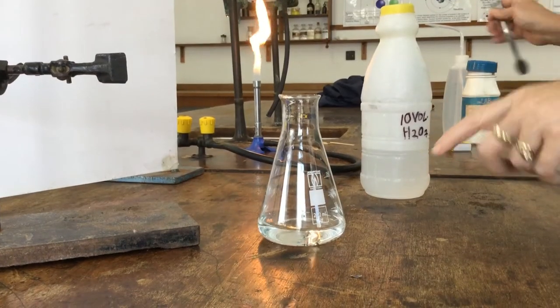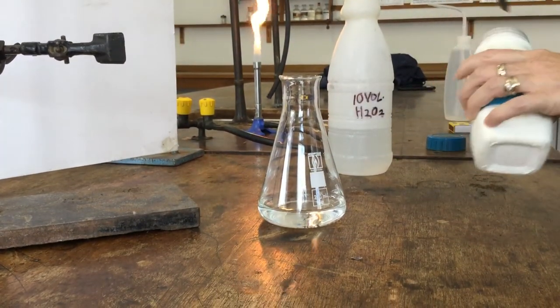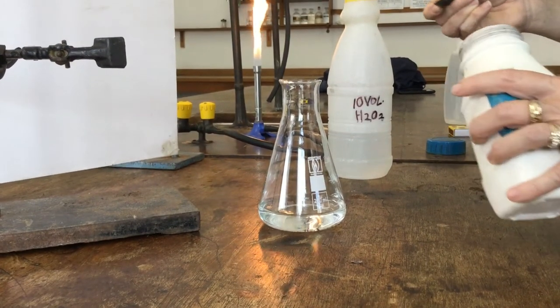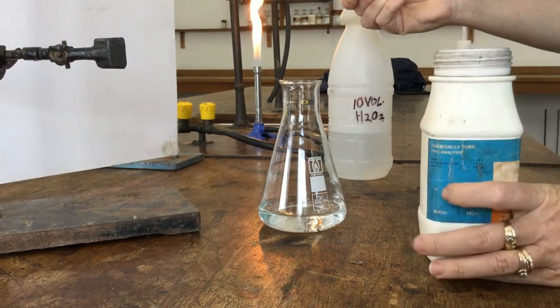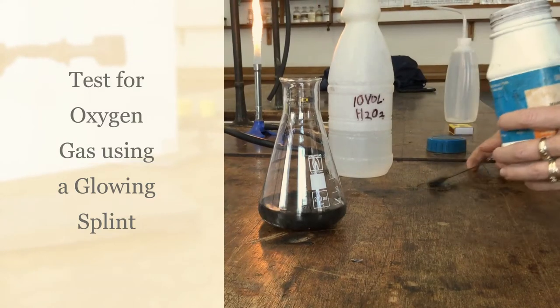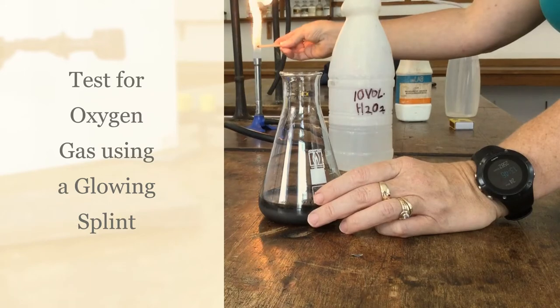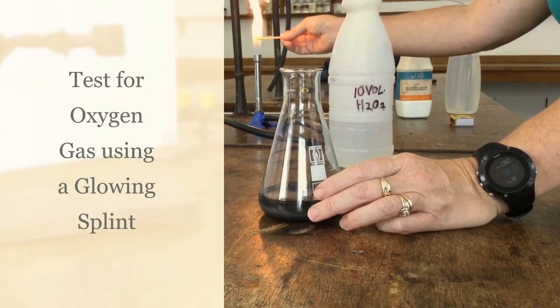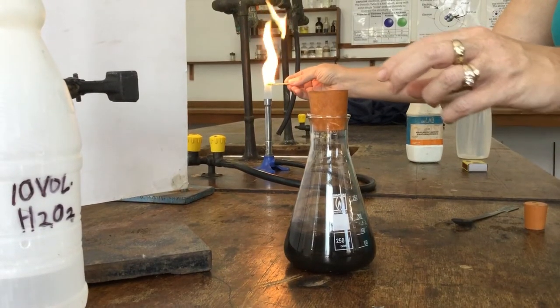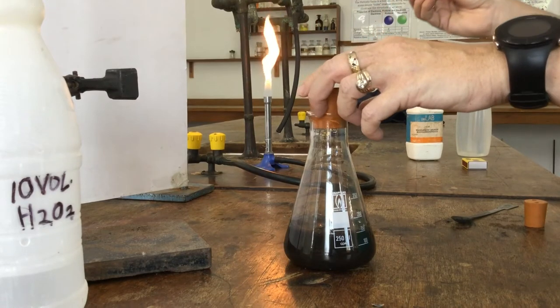This is the test for oxygen gas. We've got some hydrogen peroxide which decomposes normally, but we're going to speed up the decomposition using a catalyst, manganese dioxide. We're going to have a catalyst and hopefully we'll see bubbles being produced. The test for oxygen is it should relight a glowing splint. So we're producing some oxygen gas from the decomposition of hydrogen peroxide.